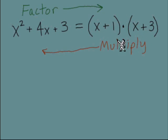But factoring is saying take this trinomial and figure out what were the two quantities that multiplied together gave us that trinomial. So we can check that these are the factors of x squared plus 4x plus 3.